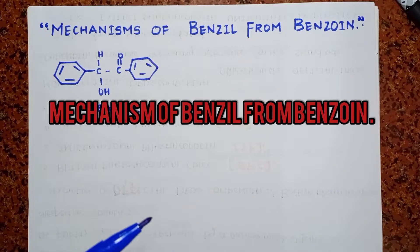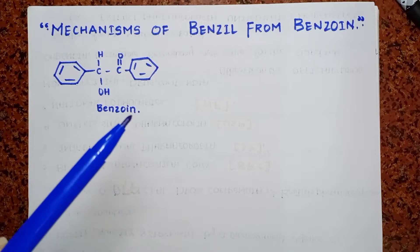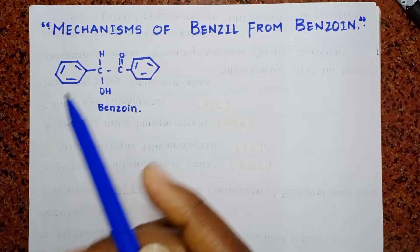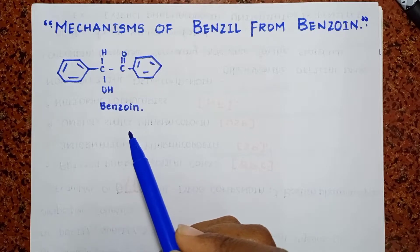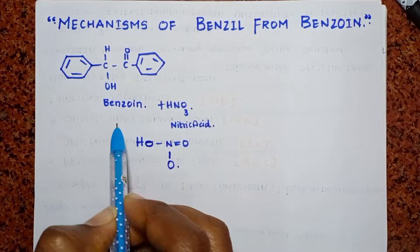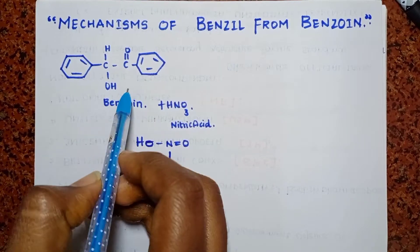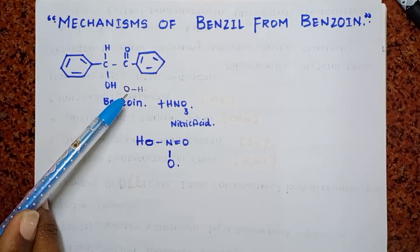Benzoin is reacting in the presence of concentrated nitric acid, which gives benzil. So the benzoin is going to react with the nitric acid. Nitric acid will react and this is the structure of benzoin. Benzoin has oxygen and hydrogen.